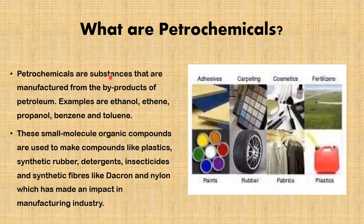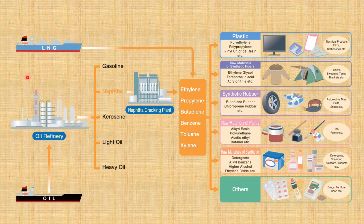What are petrochemicals? Petrochemicals are substances that are manufactured from the byproducts of petroleum. Examples of petrochemicals are ethanol, ethane, propanol, benzene, and toluene. These small molecule organic compounds are used to make compounds like plastics, synthetic rubber, detergent, insecticides, and synthetic fibers like Dacron and nylon, which have made a major impact in the manufacturing industry. Products made from petrochemicals include plastics, fabrics, rubber, paint, fertilizers, and cosmetics.